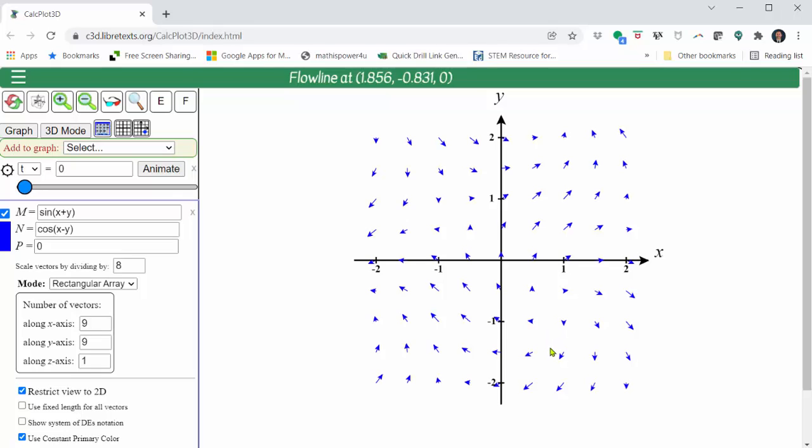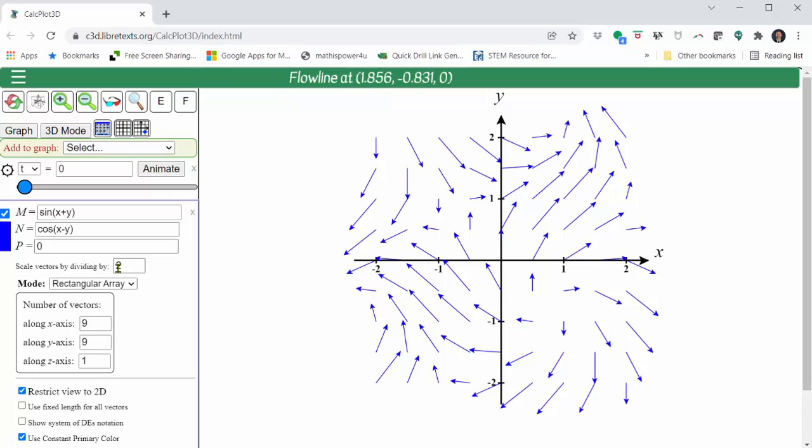So notice here, the vectors are very short. Let's change the scaling from dividing by 8 to dividing by, let's try 4. Let's try 2. Let's try 3. This looks pretty good.